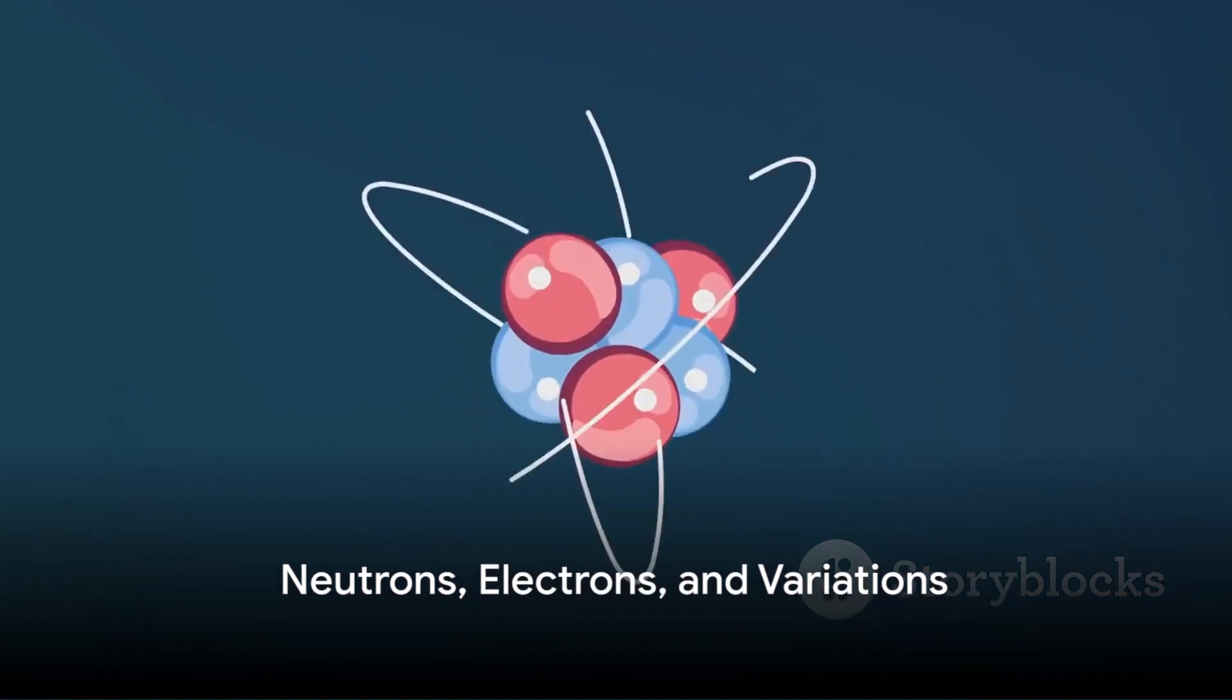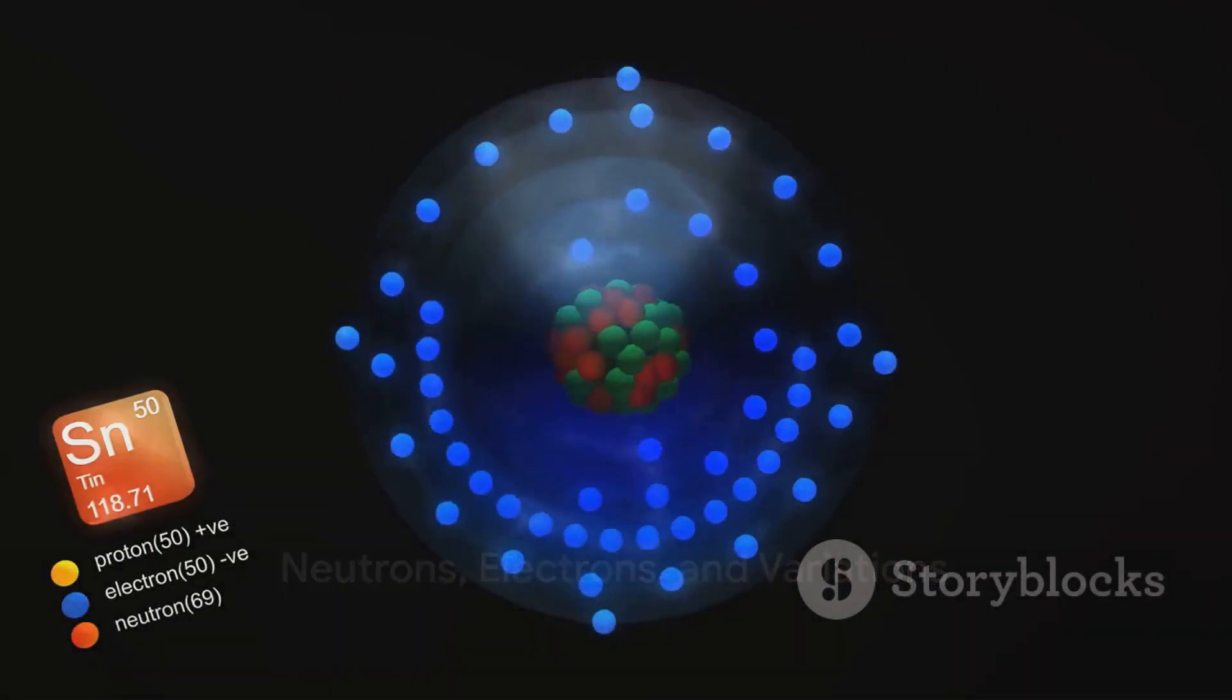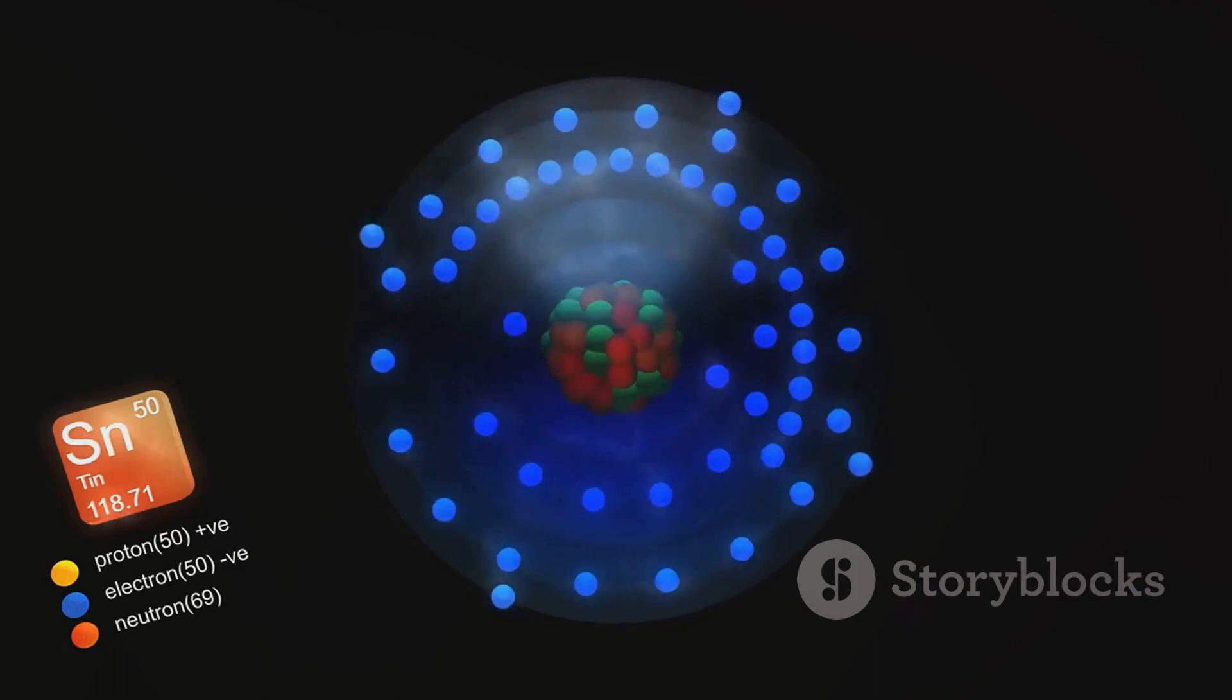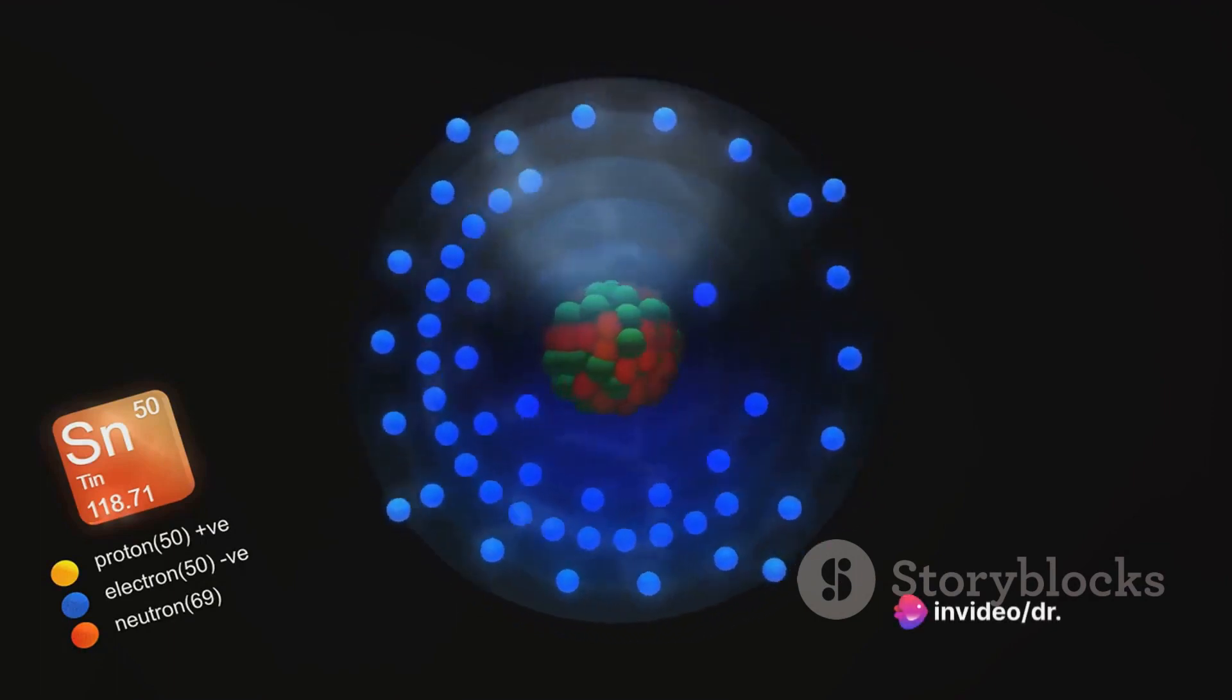But what about the neutrons and electrons? The number of neutrons in an atom can vary, resulting in different isotopes of the same element. Meanwhile, the number of electrons can change if an atom gains or loses electrons, forming ions.